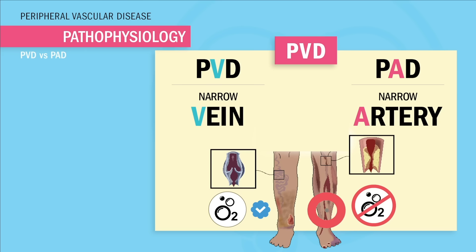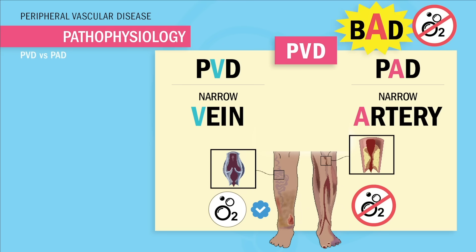PAD — think BAD. It's very bad. Low blood flow means low oxygen and low to no pulses, meaning we have cold legs that lack warmth, and also sharp calf pain when walking caused by the lack of oxygen. Guys, PAD is the worst.